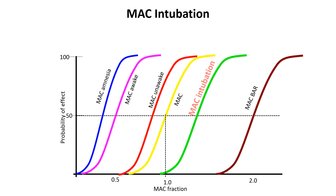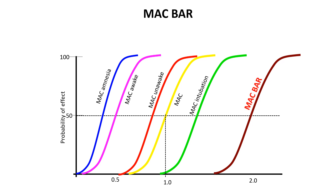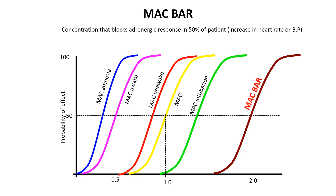MAC intubation refers to the minimum alveolar concentration of an inhaled anesthetic at which 50% of patients can be intubated without movement or adverse reactions like cough or gag. This concentration is typically higher than the standard MAC value. MAC BAR stands for minimum alveolar concentration that blocks adrenergic response. It refers to the alveolar concentration of an inhaled anesthetic at which 50% of patients show no autonomic responses — like heart rate or blood pressure increases — to surgical incision. This measure is based on catecholamine levels in venous blood, and MAC BAR is typically 1.7 to 2.0 times higher than the standard MAC value.